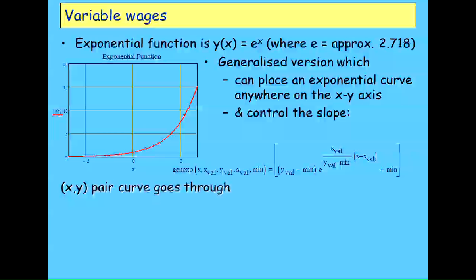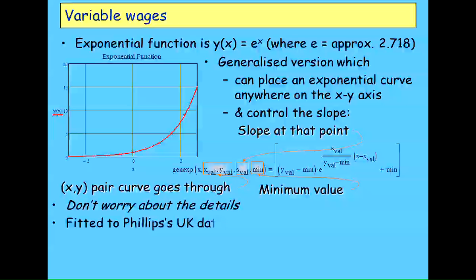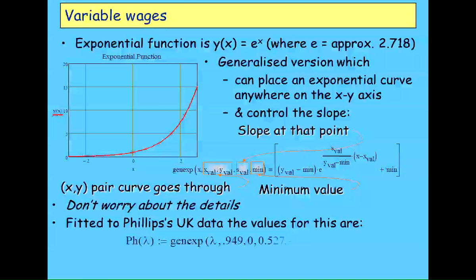The generalized version I have can put an exponential shaped curve anywhere on the xy axis and control the slope as well. No need to understand the mathematics, it's just a case of taking an exponential and transforming it. The arguments it takes are an xy pair through which the curve passes, the slope the curve has at that point, and the minimum value the curve has. I then fit that to UK data using a modern computer, which does it much more easily than the hard slog Phillips had to do.